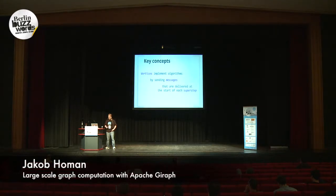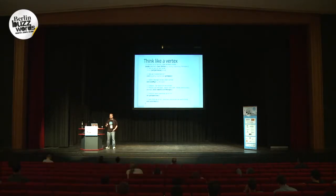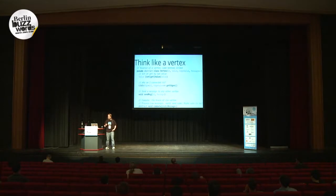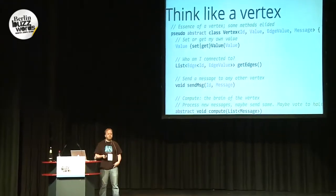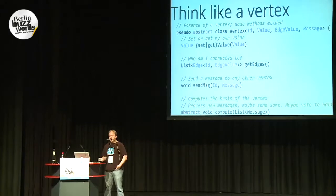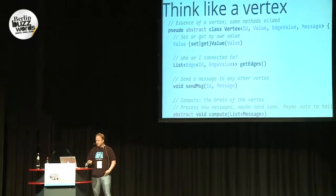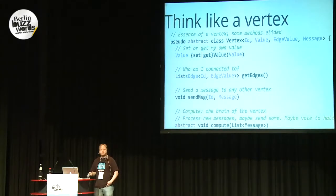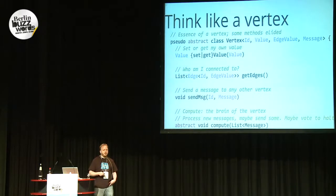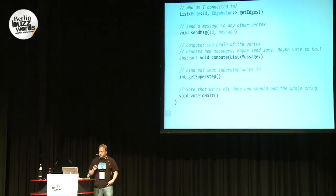Messages that are sent in one super step arrive in the next, so how are you going to use these key concepts? The trick here is to think like a vertex. You don't write a mapper and reducer; instead you implement a class — that's a vertex. What can you do with a vertex? A vertex has a value, so you can set and change your own value. A vertex has connections, edges out to other vertices, so you can get those, make new ones, and communicate by sending a message to any vertex you know the ID of.